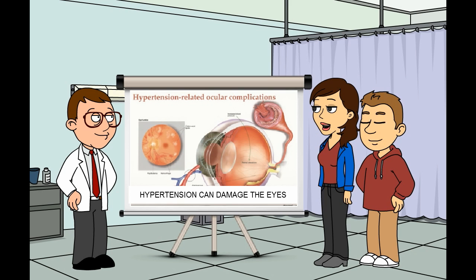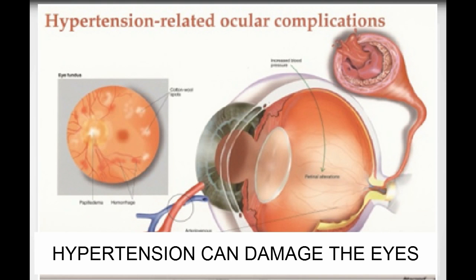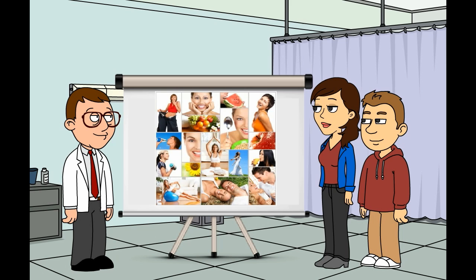Doctor, what are the complications of hypertension? Untreated hypertension strains the heart and arteries and in time damages them. Hypertension is a key risk factor for heart failure, heart attack, stroke, and eye or kidney damage.